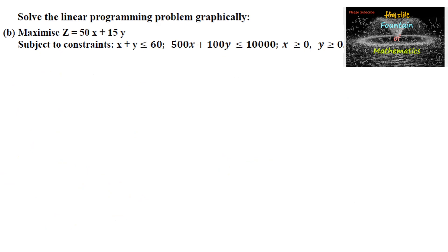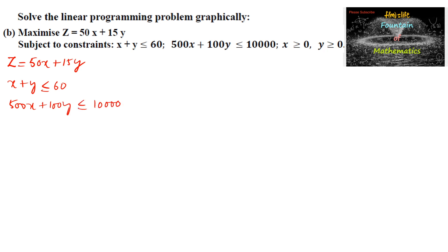Solve the linear programming problem graphically. Maximize z = 15x + 15y subject to the constraints: x + y ≤ 60, and 500x + 100y ≤ 10,000 (which can also be written as 5x + y ≤ 100), and x ≥ 0, y ≥ 0.